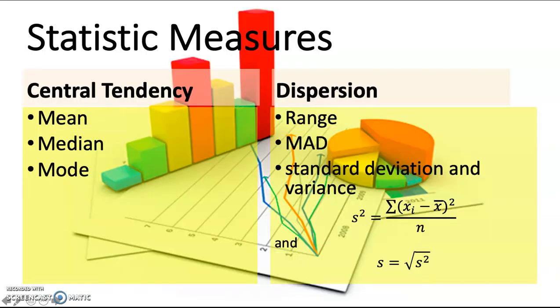Central tendency and dispersion are the two statistical measures to summarize our data. For central tendency, we have the mean, median, and mode. For quantitative data, we usually calculate and present the mean more frequently rather than using median and mode. But mean can also be affected by outliers. That is why we calculate the median as a measure of central location.